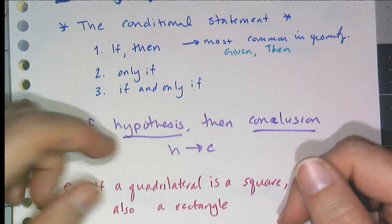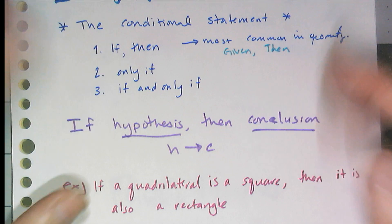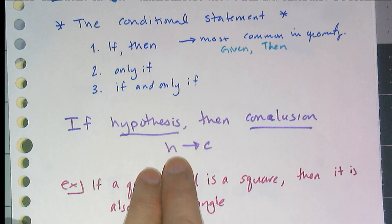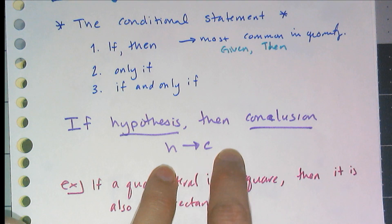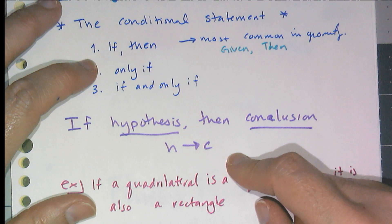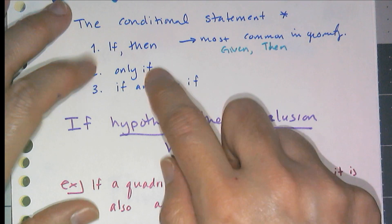And logically, when you get to actually study logic, they kind of get rid of the words and start using symbols. So logically, the if-then statement is h arrow c, that means the hypothesis leads to the conclusion. Now we're not going to talk about only if, and we're going to briefly talk about if and only if, because we don't see these very often.